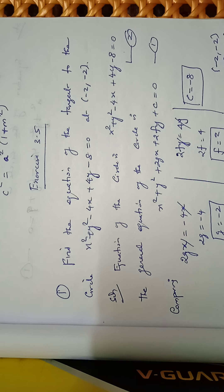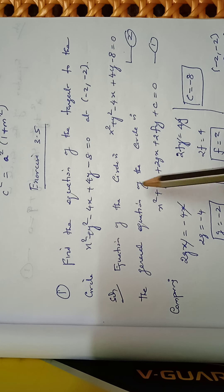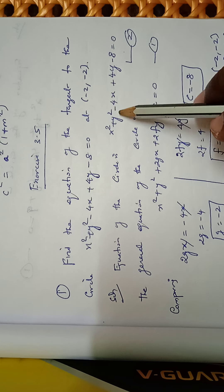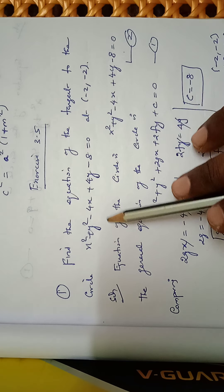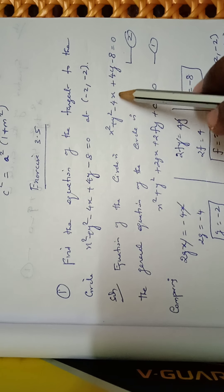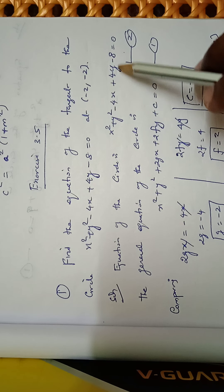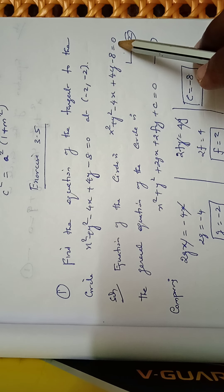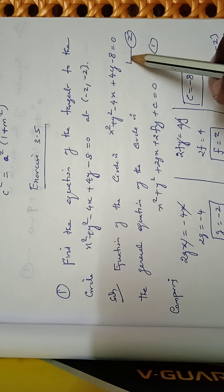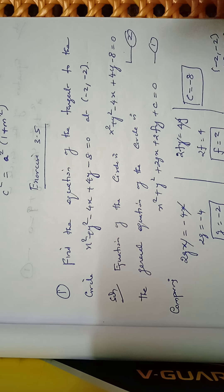minus 4x + 4y minus 8 = 0 at the point (−2, −2). The equation of the circle is already given: x² + y² − 4x + 4y − 8 = 0. This is equation number 1.